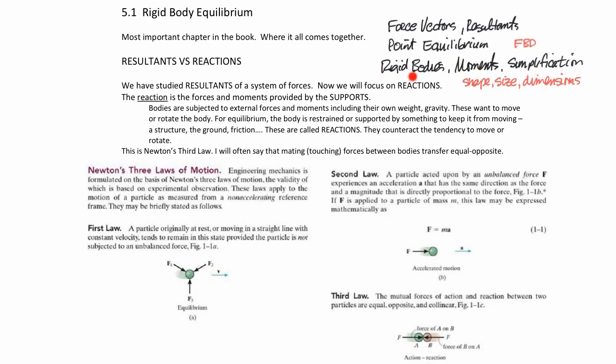In rigid bodies, this is where shape, size, and dimensions matter. In point equilibrium, everything is just a point, so there is no shape to consider.